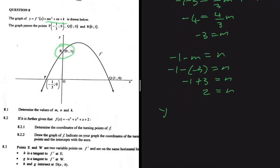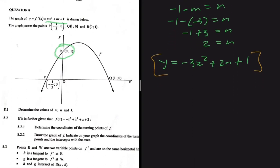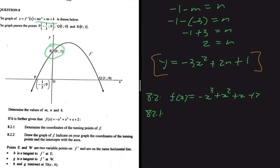Our equation is now y equals minus 3x squared plus 2x plus 1. We have determined k equals 1, n equals 2, and m equals minus 3. Moving to question 8.2: it is further given that f(x) equals minus x cubed plus x squared plus x plus 2. Question 8.2.1 asks us to determine the coordinates of the turning points of f, with a mark allocation of 3.